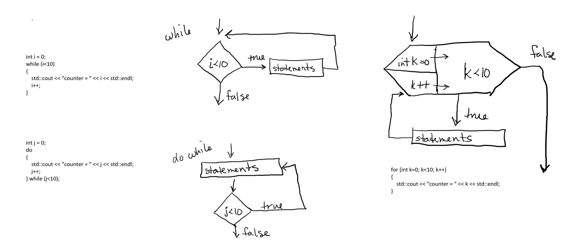The initialization only happens once. The increment happens as many times as the loop happens, and the test happens as many times as the loop happens, plus one final test that gives you false. When it's false, you go ahead and run the rest of your code. Thanks for watching.